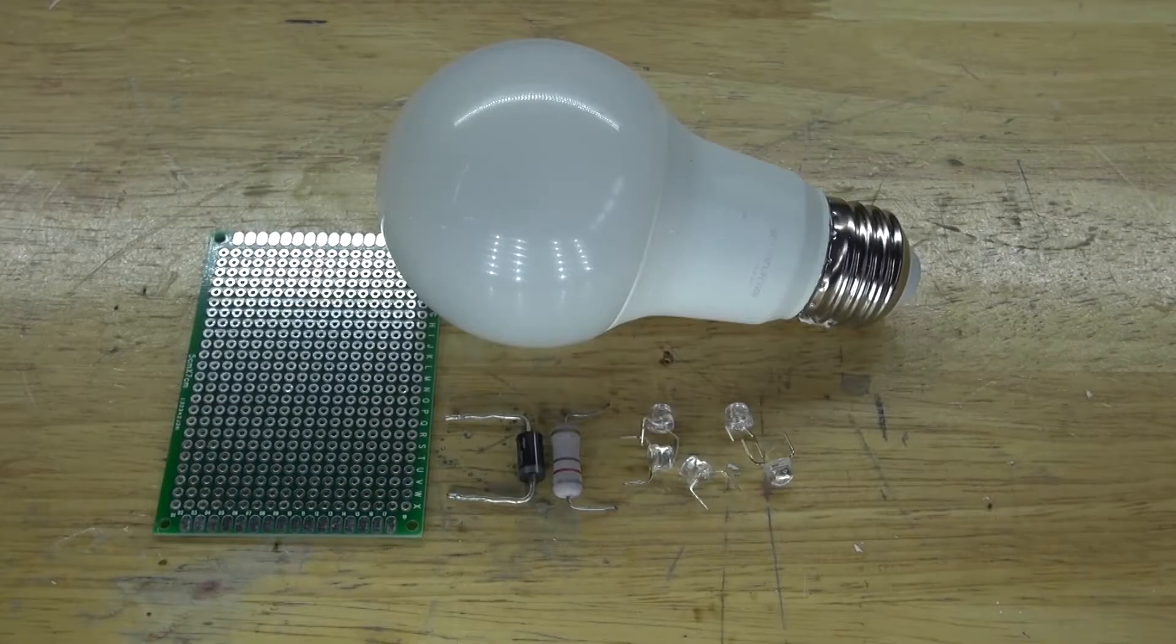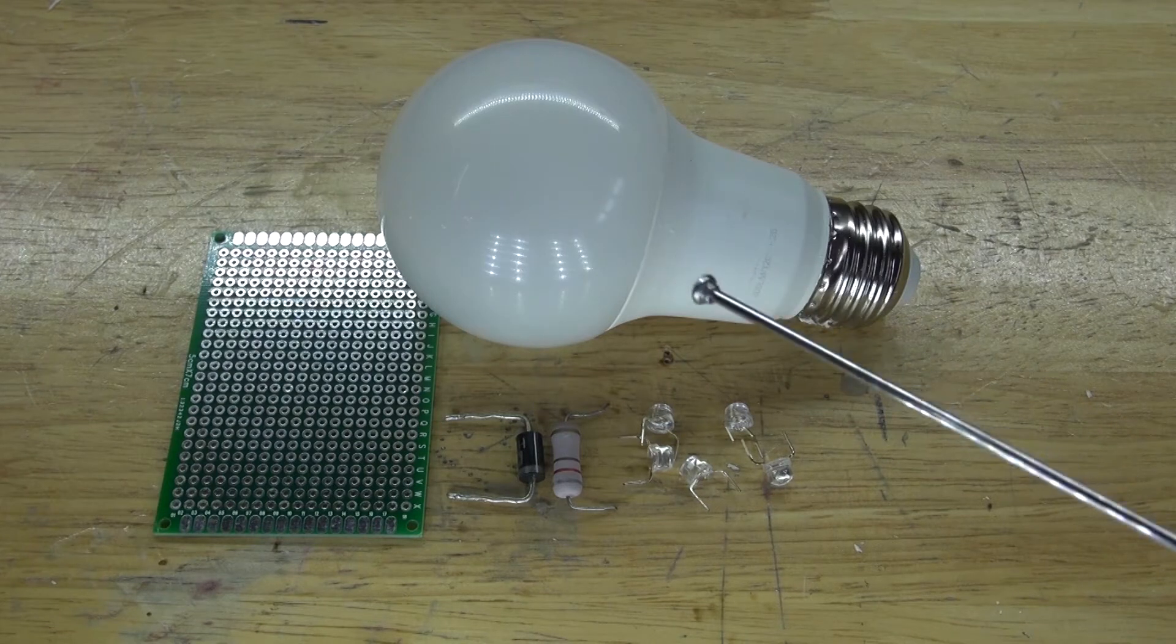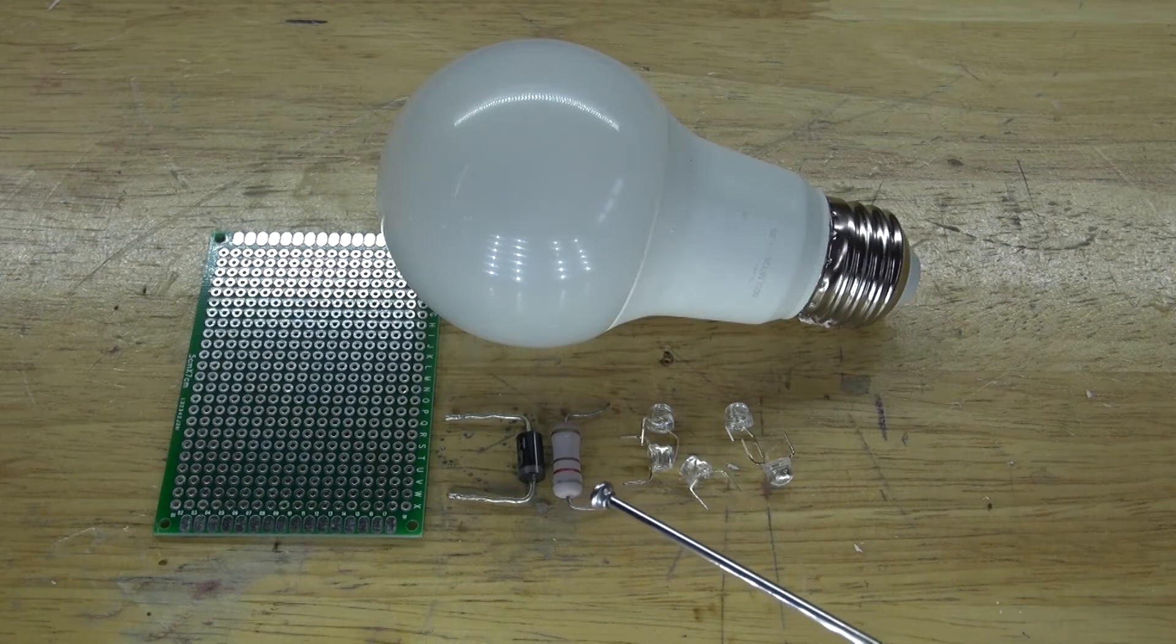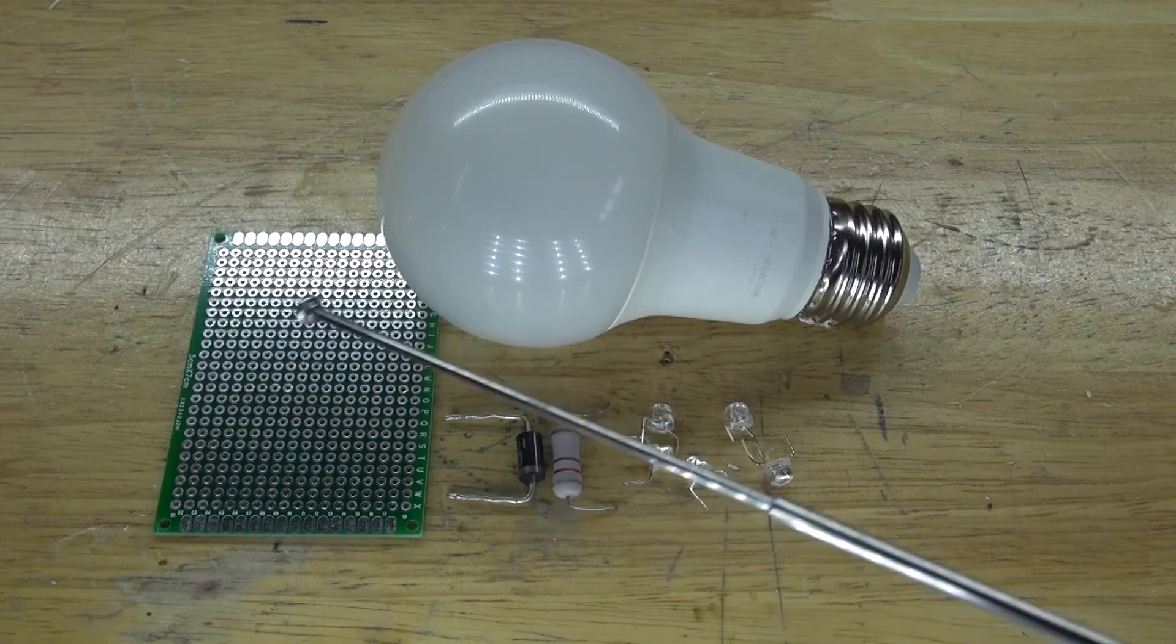And these are the items you're going to need to make for this project. The items you're going to need: an LED lightbulb, 5 auto-changing RGB LEDs, a 2 watt 820 ohm resistor, an HER303 diode, and a perfboard.